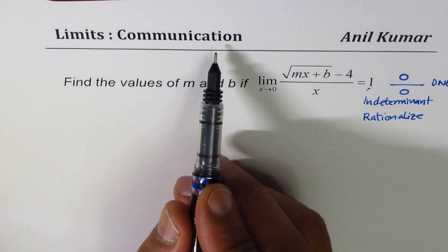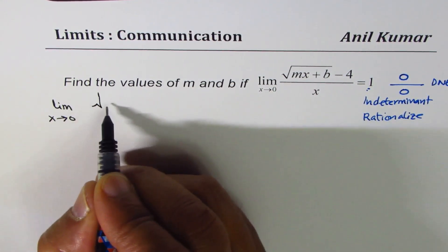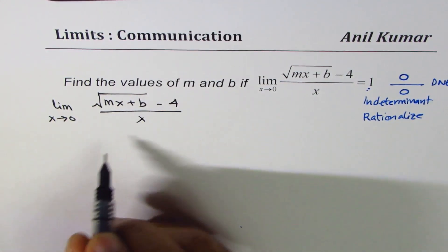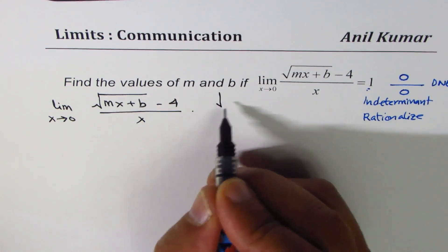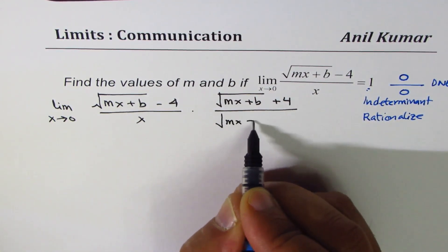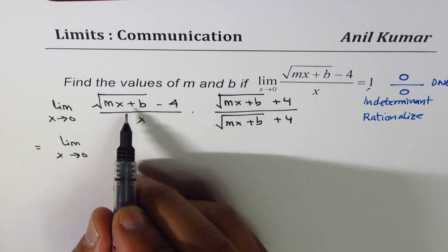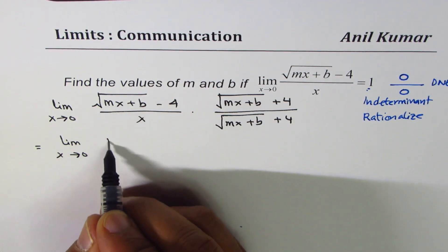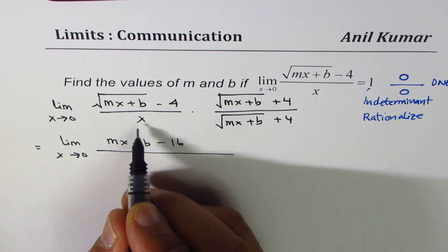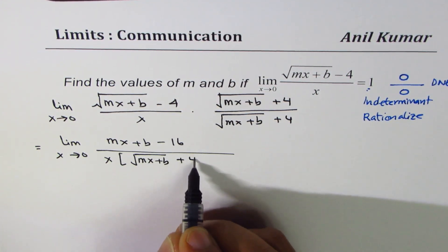This part is very important to get full marks for communication. We have the limit as x approaches 0 of (square root of mx plus b, minus 4) over x. To rationalize, we multiply and divide by the conjugate: (square root of mx plus b plus 4). This gives us (mx plus b minus 16) in the numerator, and x times (square root of mx plus b plus 4) in the denominator.